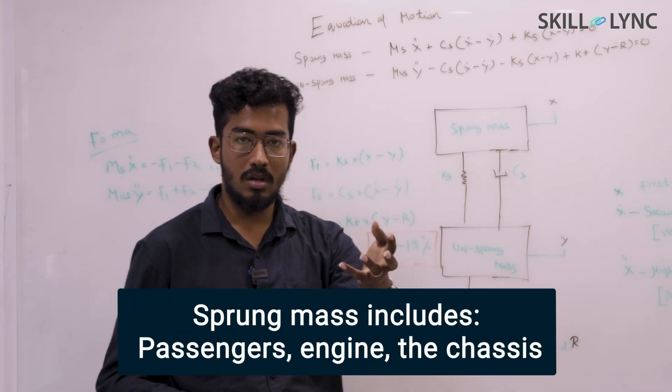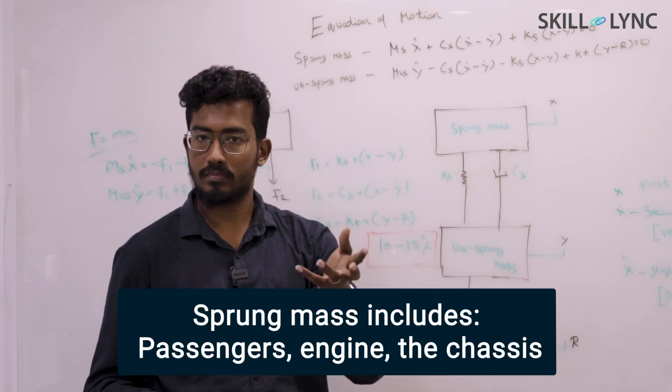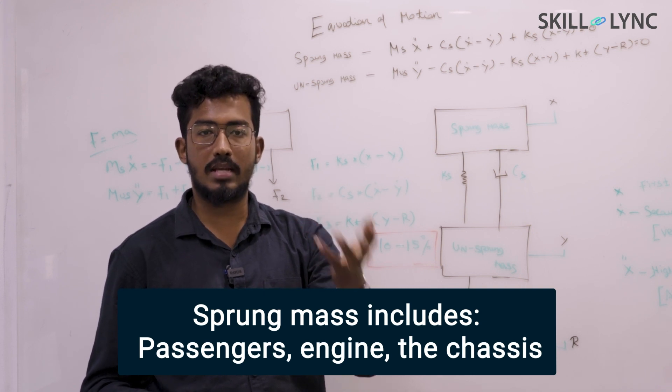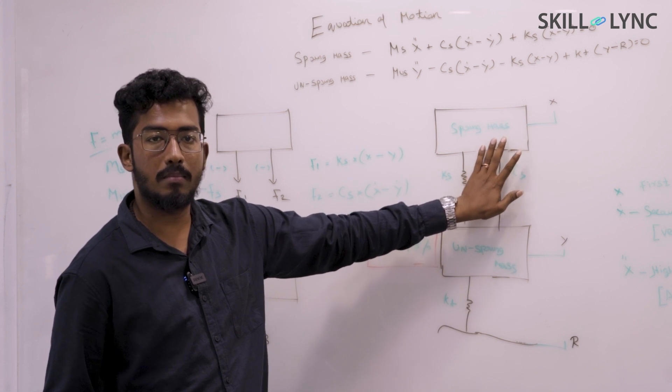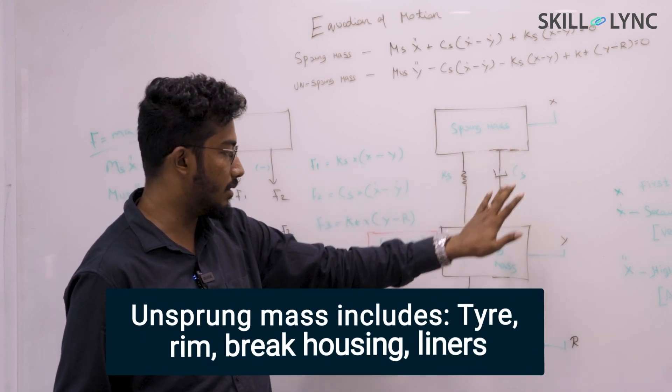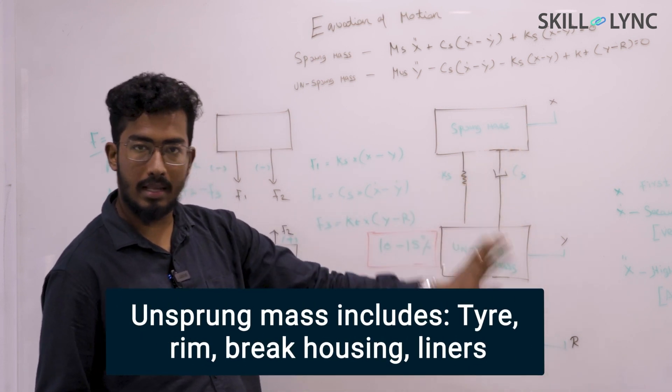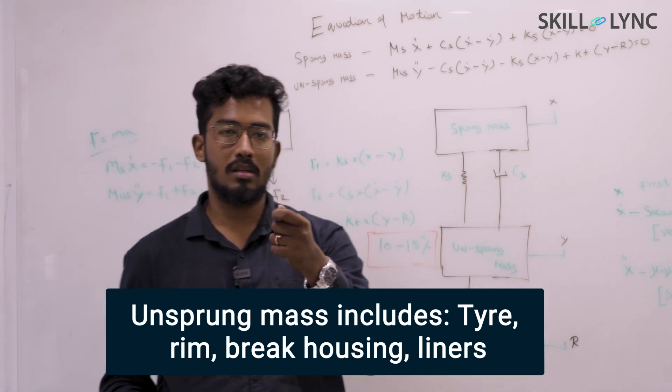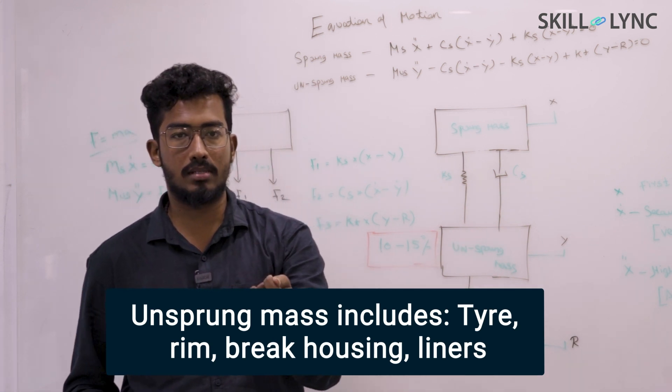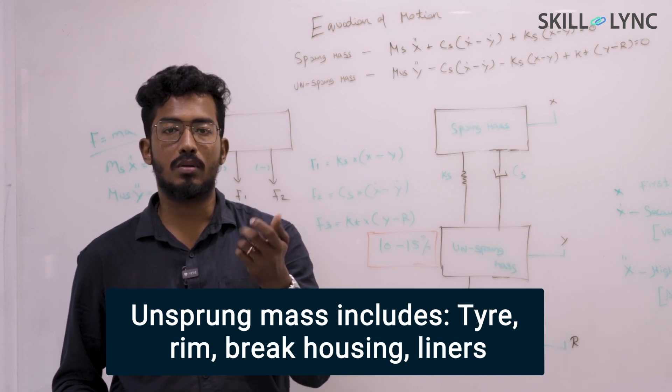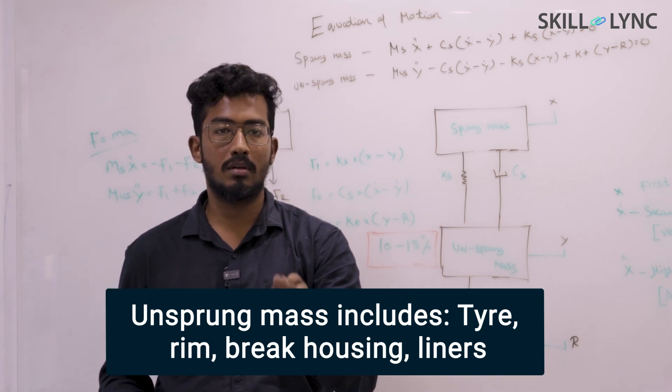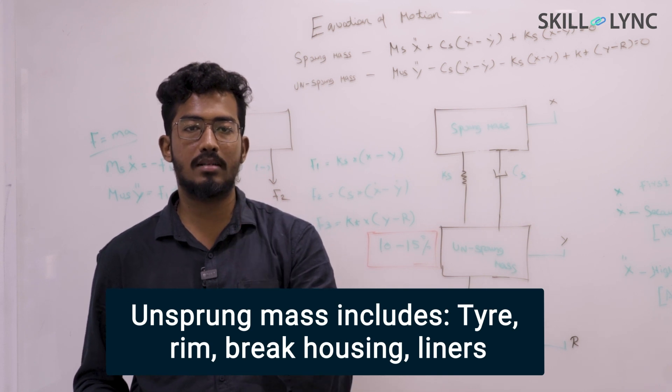The passengers sitting in the vehicle, your engine, your chassis - everything comes under sprung mass. So obviously, your sprung mass is going to be higher than unsprung mass. On the other hand, think about components in unsprung mass, such as your tire, rim, brake housing, liners - all that.